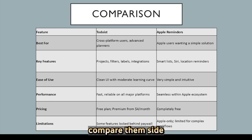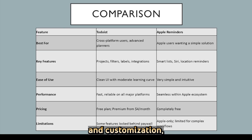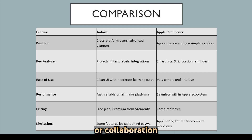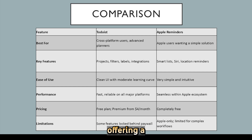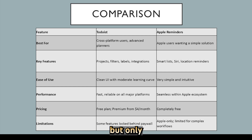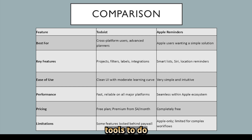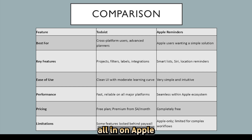Now let's compare them side-by-side. Todoist offers more control and customization, especially for managing multiple projects or collaboration across platforms. Apple Reminders is more straightforward, offering a polished experience for personal tasks, but only within Apple's ecosystem. If you're on multiple devices or need advanced tools, Todoist has the edge. But if you're all-in on Apple and want something simple and free, Reminders gets the job done.